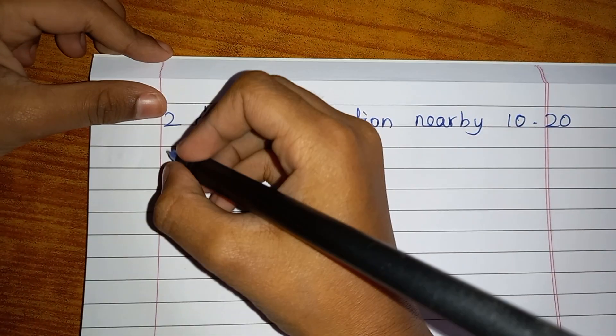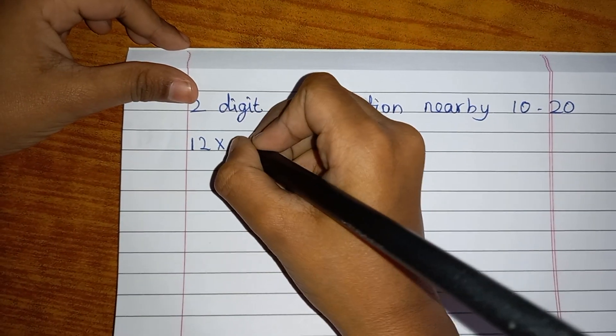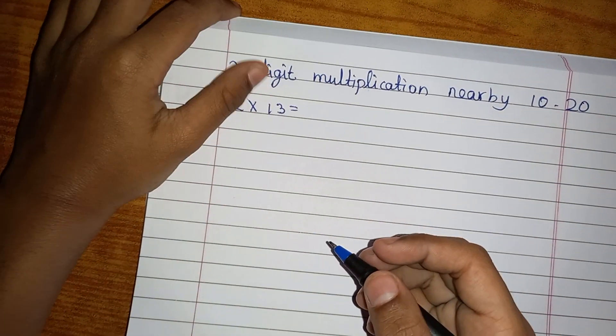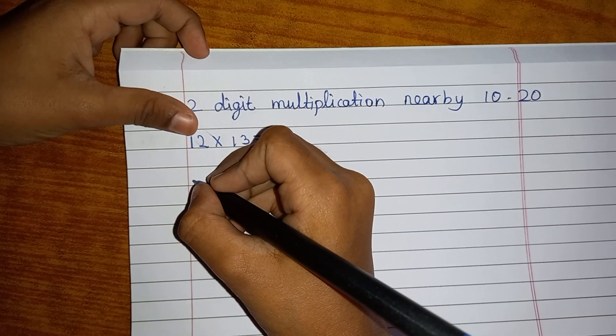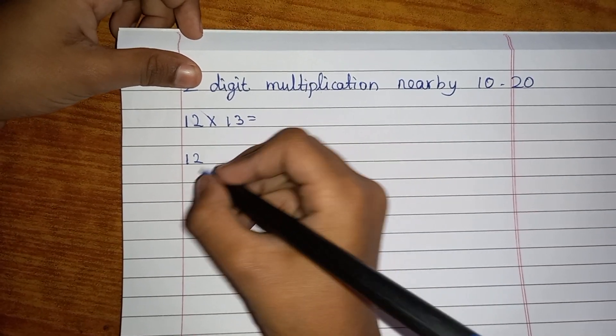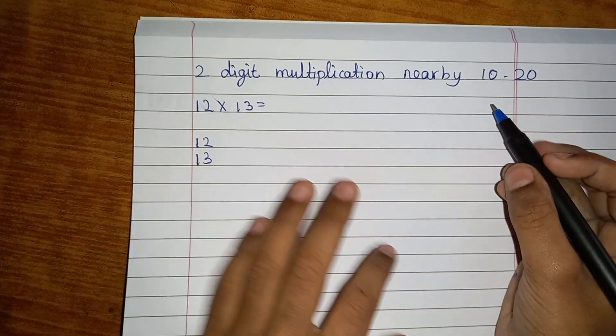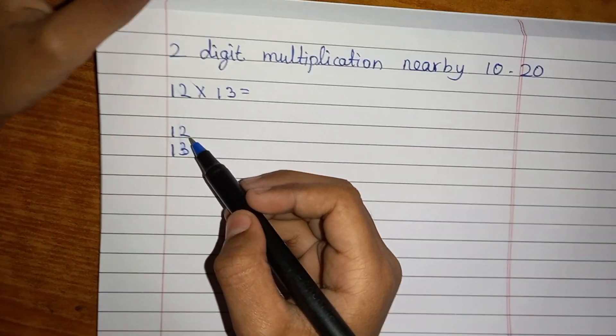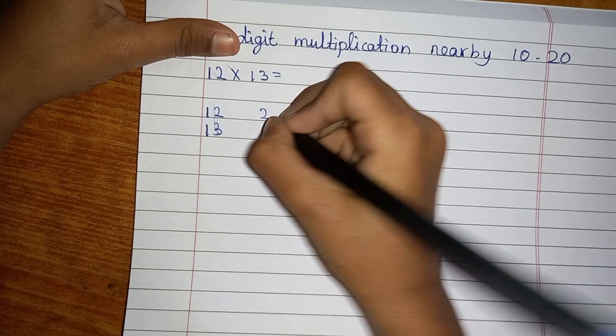The example is 12 multiplied by 13. Let's see how much we get. But before that, we have to write 12 aside and 13 here. Then it's like nearby 10. So 12 is more than 10, it's 2 more, so you have to write the 2 here.